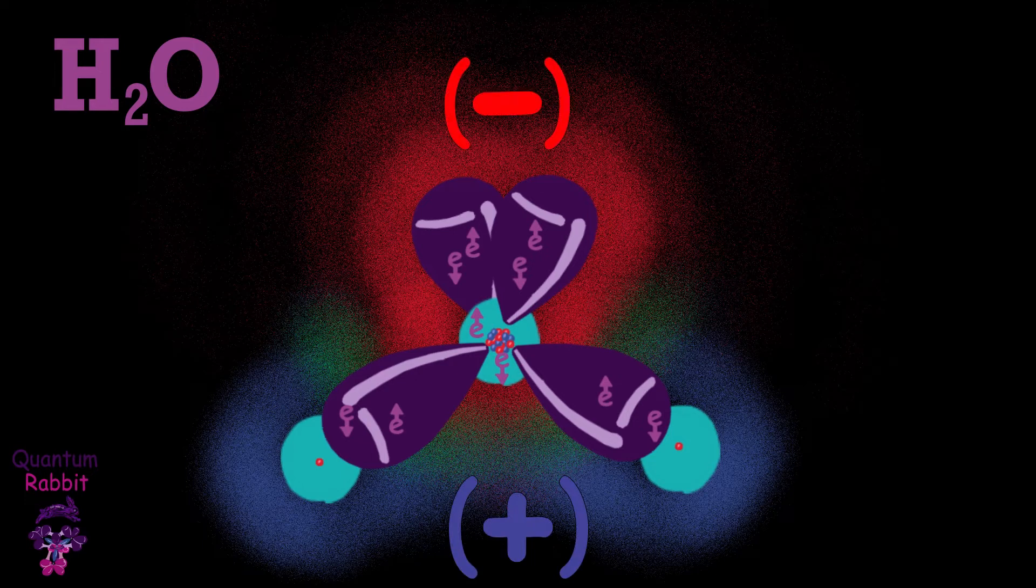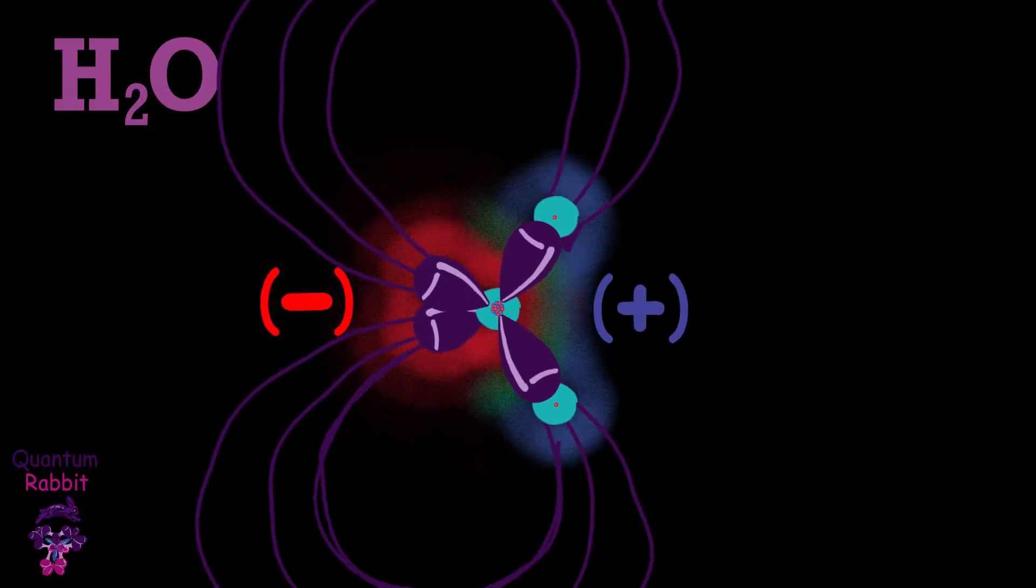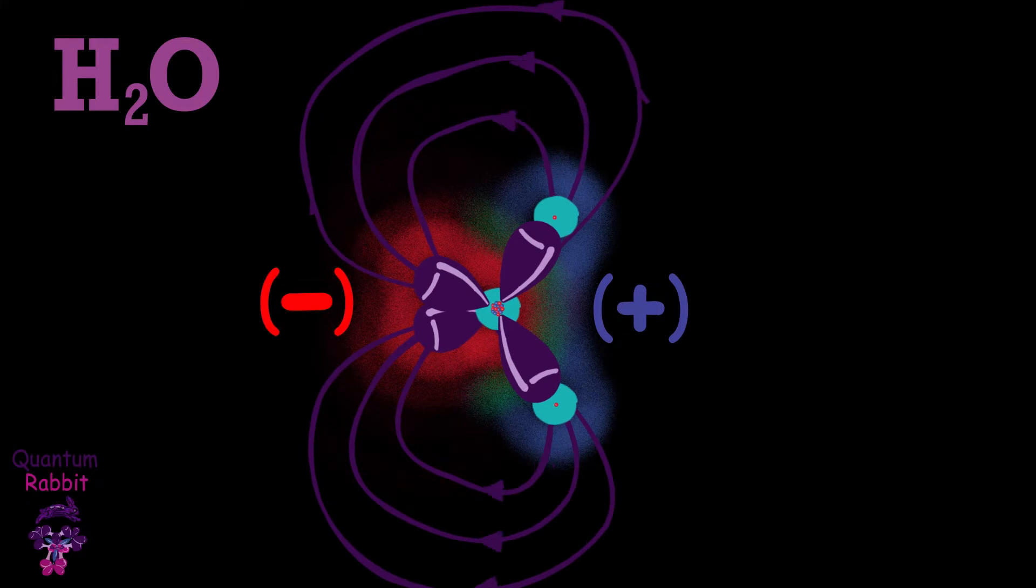This bipolarity causes the electromagnetic field to be distorted, represented in the animation by arrows coming out of the positive parts and arrows going into the negative parts.